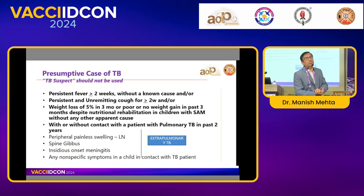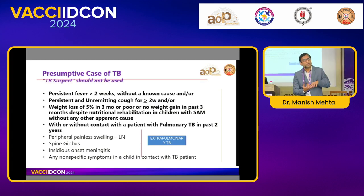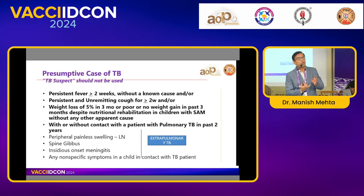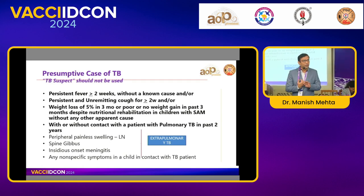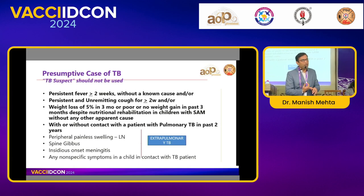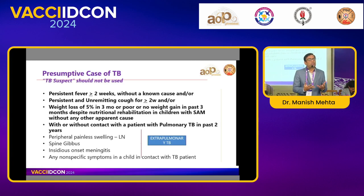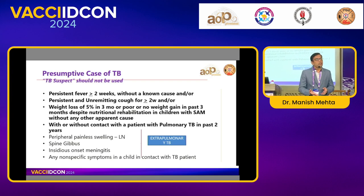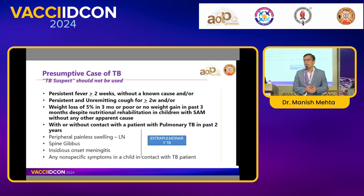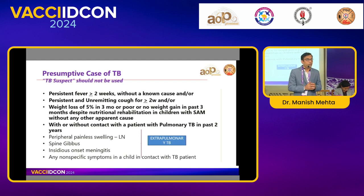Why is it difficult to diagnose tuberculosis in children? Because it is a paucibacillary disease — very few TB bacilli in the sputum. Second, collecting a sputum sample in children is very difficult, and convincing parents for gastric lavage is also an issue. Microbiological confirmation is therefore very difficult in children. In adults you can get sputum and classical X-ray findings are more common. In children, classical X-ray findings of tuberculosis are rare. So it's a paucibacillary disease — difficult to diagnose and difficult to get the sample.